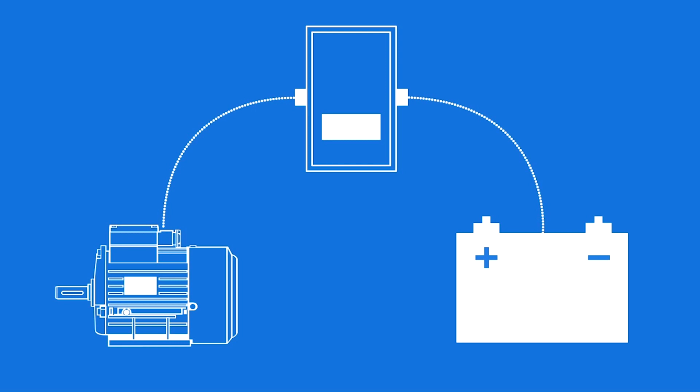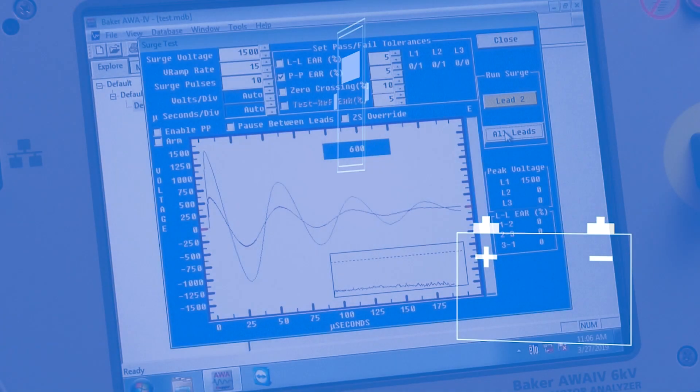When the switch is closed, a large amount of current flows into the winding causing a voltage to appear across the wire insulation. This voltage is due primarily to the inductance of the winding. The battery quickly discharges and the whole surge test is done in a few microseconds.